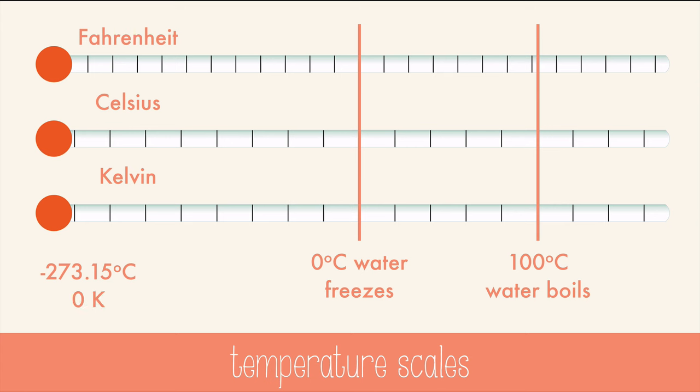The Kelvin scale is based on absolute zero and starts at zero Kelvin with no negative numbers. One degree Celsius is equivalent to one degree Kelvin.